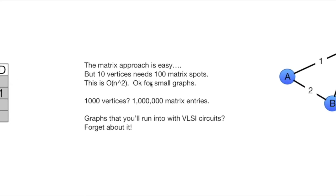If you've got ten vertices, you need a hundred spots on your matrix. This is a big O of n squared sort of growth. It's going to be okay for small graphs, but once you get big ones, you're going to be in a world of hurt. If you've got a thousand vertices, you're talking about a million matrix entries, and if you talk about the graphs that you'll actually run into with VLSI circuits, you're going to be in a world of sadness and misery.